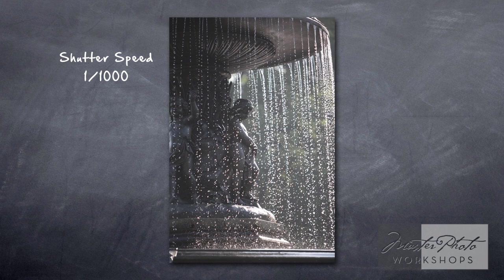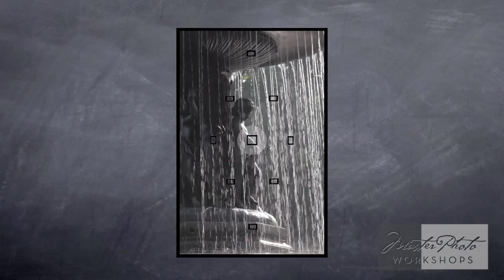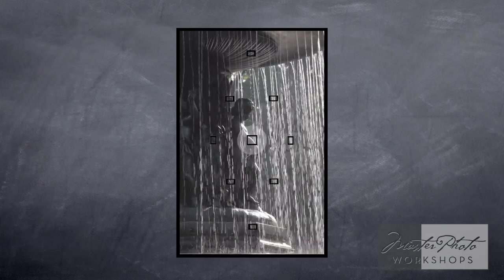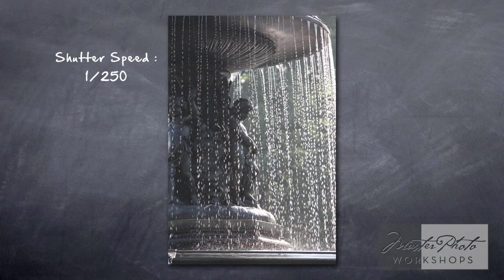It gives us some jagged texture and a sharp look to the water. Now we're going to shoot a shot at a two-fiftieth of a second. You'll start to see a little bit of blur in the water — those drops are just starting to get a little bit longer, a little more prolonged. It's starting to give that feel of motion to the water.